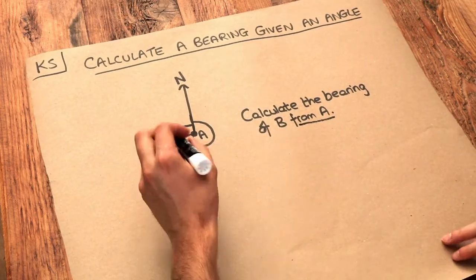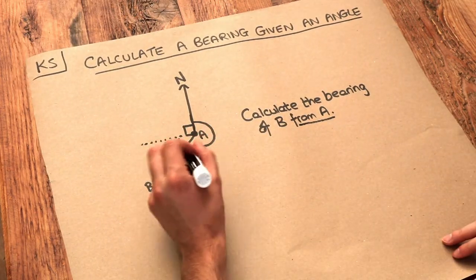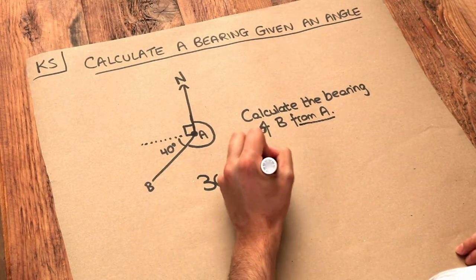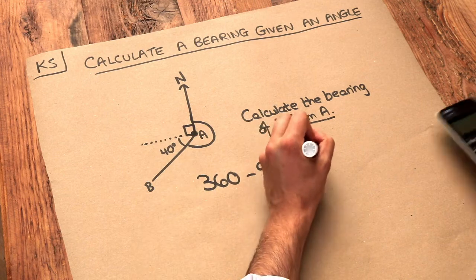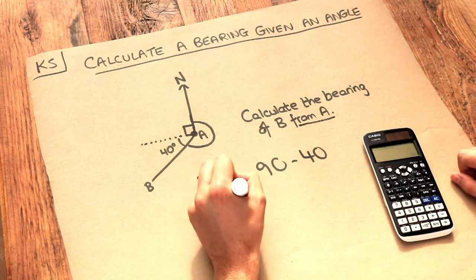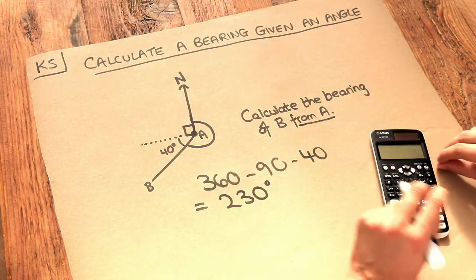So if these add up to 360, we can get this angle by doing 360 subtract 90 subtract 40. If we do that on our calculator, we get 230 degrees. That is the final answer.